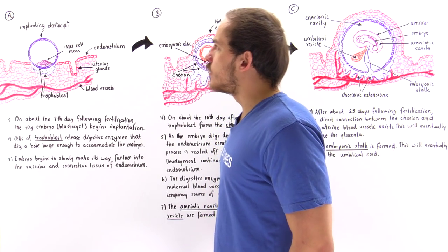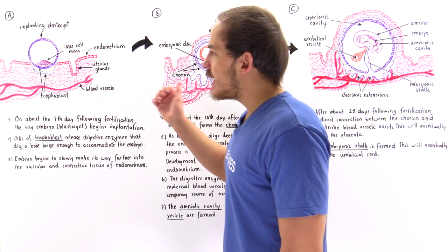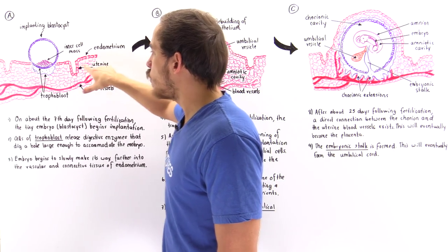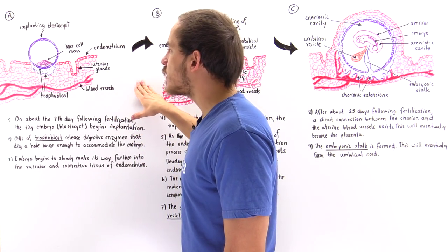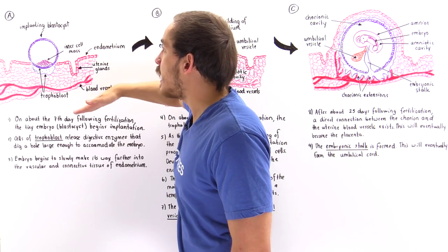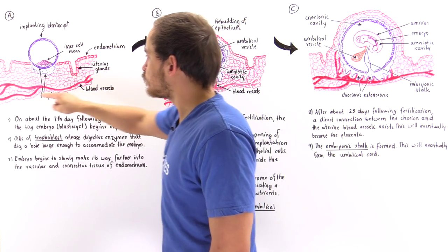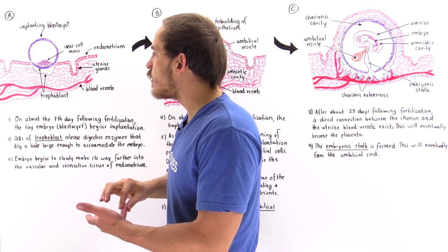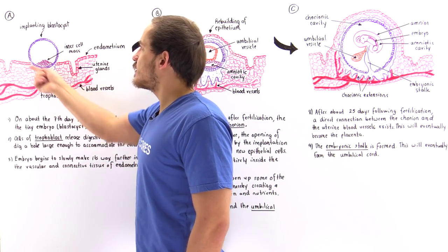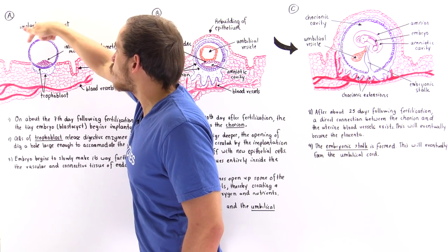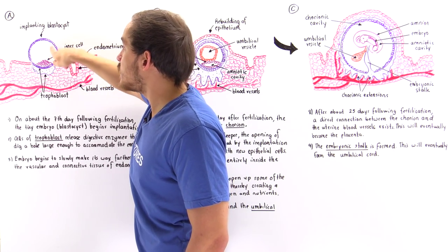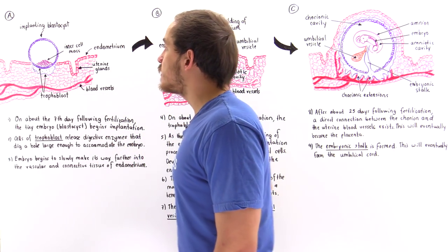Looking at Diagram A, we describe the lining of the uterus — the endometrium — which includes connective tissue and vascular tissue. The cells shown in light pink as well as the red cells make up the epithelium of the endometrium, and we also have blood vessels that carry oxygen and nutrients along this endometrium. The blastocyst is shown with dark purple cells representing the trophoblast, light purple cells representing the inner cell mass, and the inner cavity is the blastocele containing fluid.